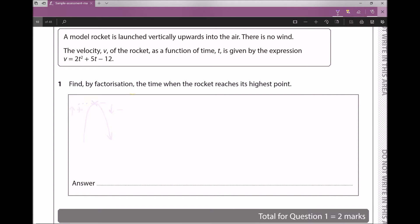Let's take our equation v = 2t² + 5t - 12 and we need to find the value of t that makes the velocity equal to zero. It specifies that it wants us to do this by factorization, which means we're going to split this into two brackets.